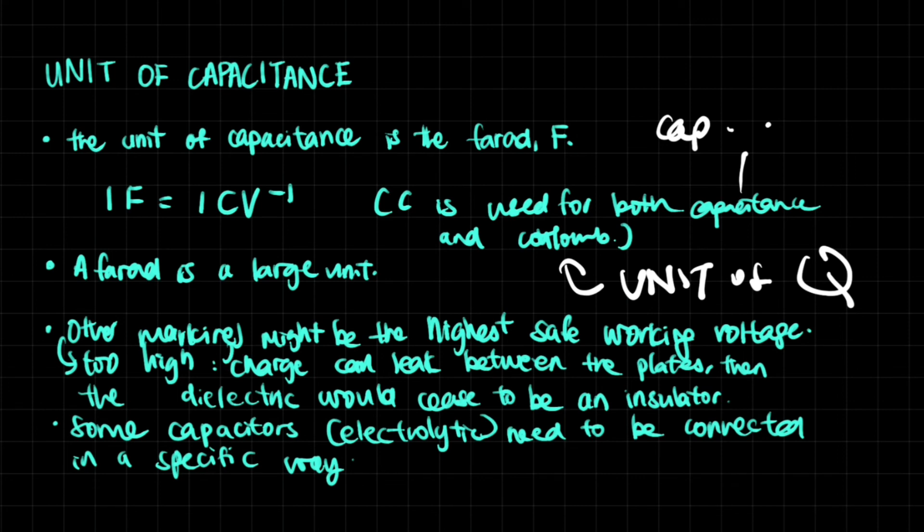Now, other markings on a capacitor might be the highest safe working voltage, which means that there's a limit to the magnitude of the voltage that you can connect it to. If it's too high, then the charge can actually leak between the two plates through the dielectric. And that means that the dielectric will cease to be an insulator. And so it's not going to charge, it's not going to store the charge. It's not going to store some energy because it will just leak through it.